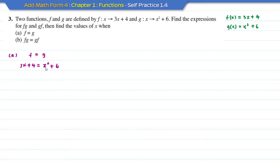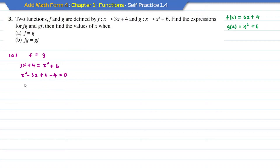In order to keep the x squared positive, I'm going to move 3x and plus 4 to the other side. So I'm going to get x squared minus 3x plus 6 minus 4 equal to 0, which gives x squared minus 3x plus 2 equal to 0.